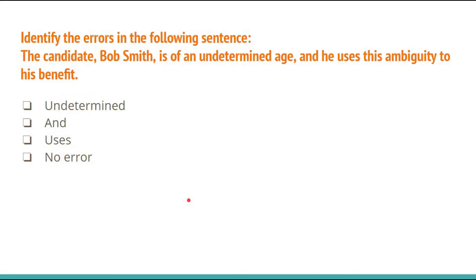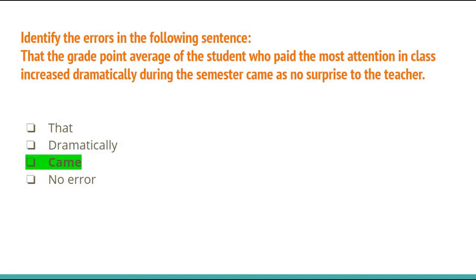Identify the errors in: 'The candidate Bob Smith is of an undetermined age and he uses this ambiguity to his benefit.' Comment below with the right answer. The last question: 'Identify the error in — that the grade point average of the student who paid the most attention in class increased dramatically during the semester came as no surprise to the teacher.' The correct answer is option C: 'came.' With this we are done with the aptitude, verbal, and logical questions.